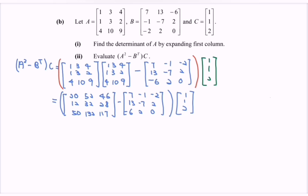Next, compute A squared minus B transpose. The result gives us the matrix with entries 13, 53, 48, negative 1, 39, 26, 56, 130, 117.